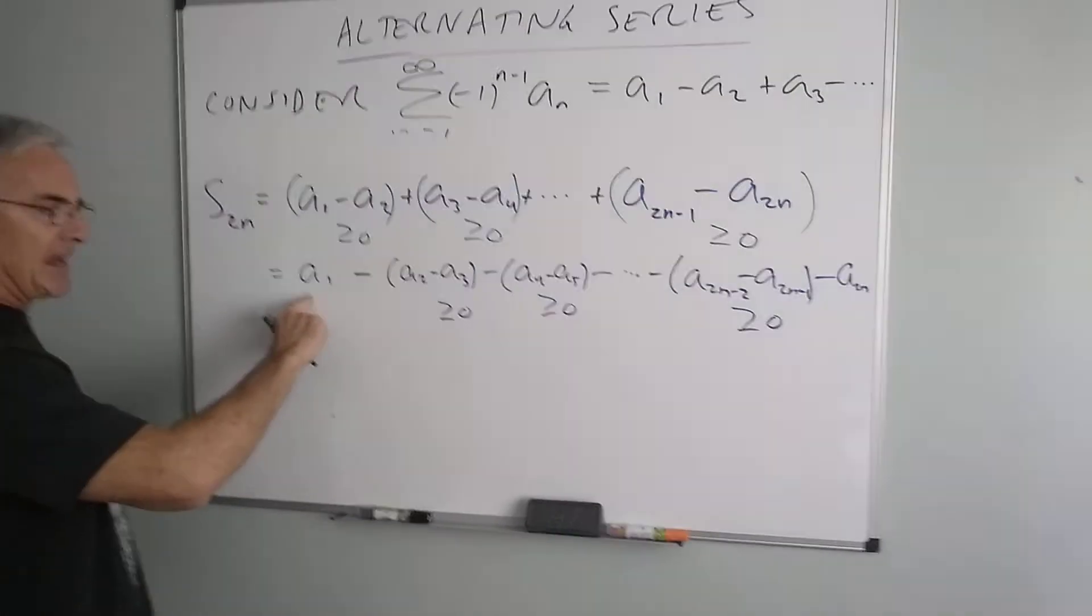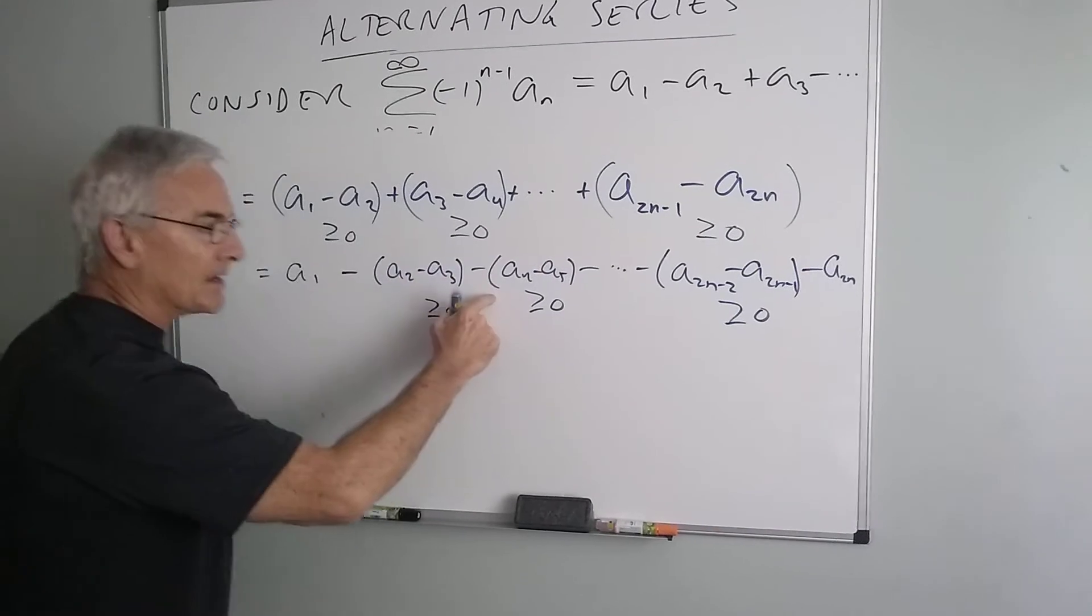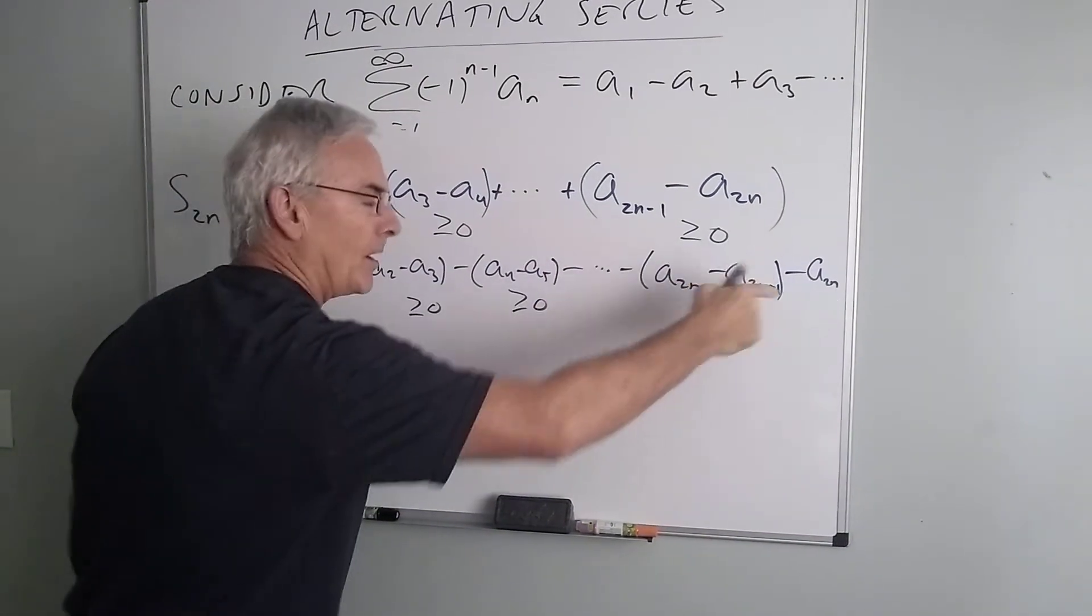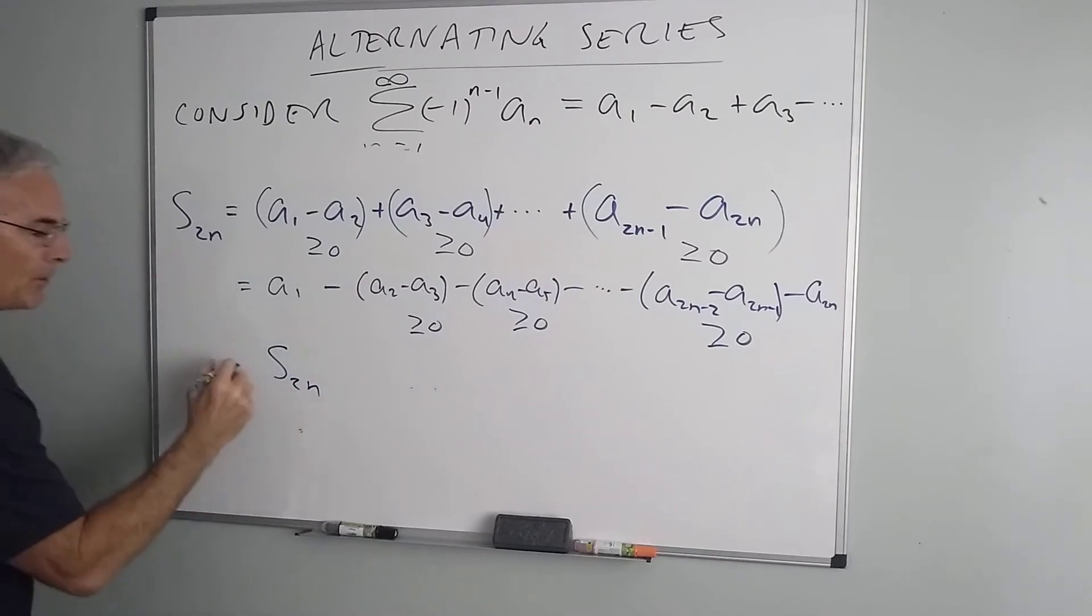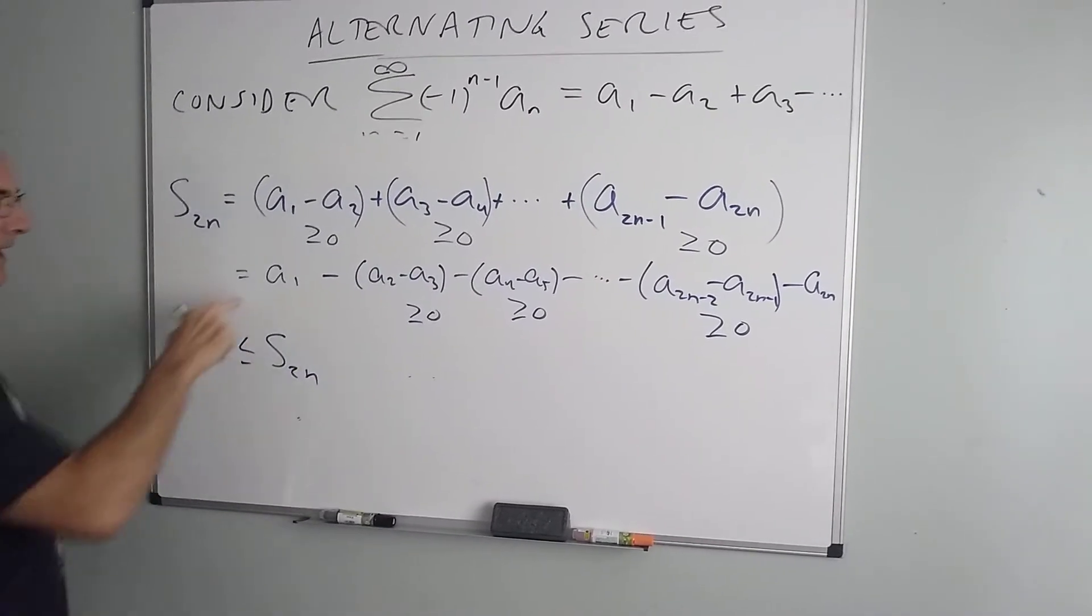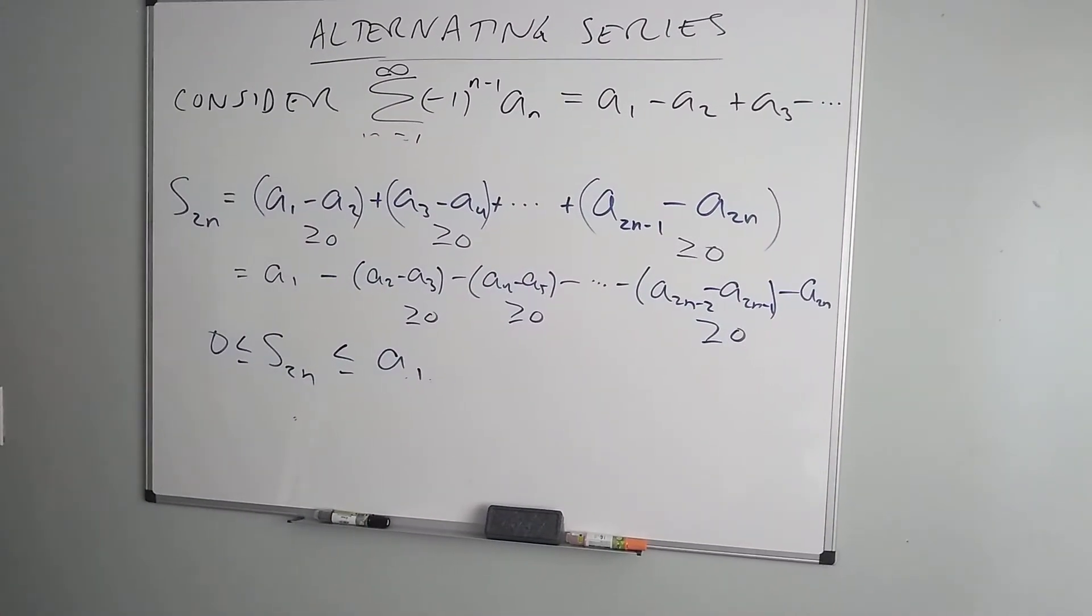The sum of the first two n terms is a1, which is a positive value, minus a positive quantity, minus a positive quantity, all the way down the line. That means that s2n, which we already said was greater than or equal to zero, is actually less than or equal to a1.